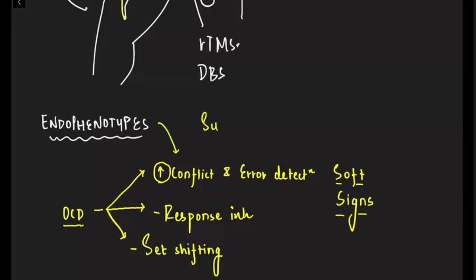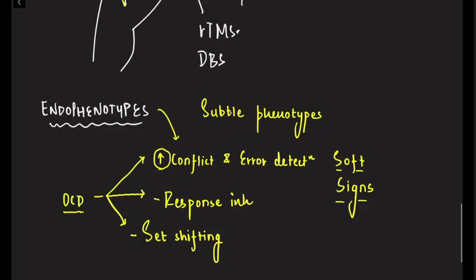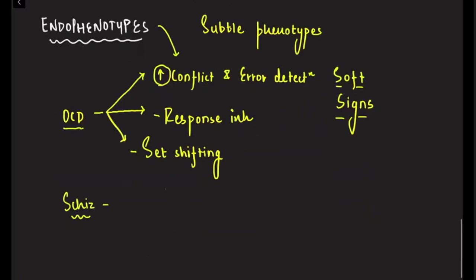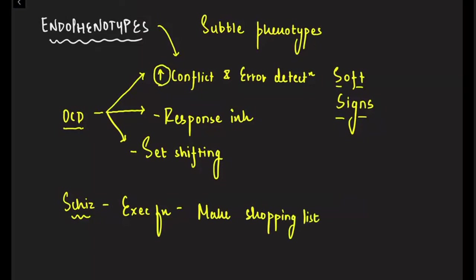These characteristics are essentially known as endophenotypes — subtle phenotypes. The genotype is the biological constitution; the phenotype is the manifestation of genetic content. An endophenotype refers to inherited characteristics found at higher rates in people with certain mental health disorders. Another example: people with schizophrenia or their first-degree relatives have problems with executive functions, such as making a shopping list or planning their day.